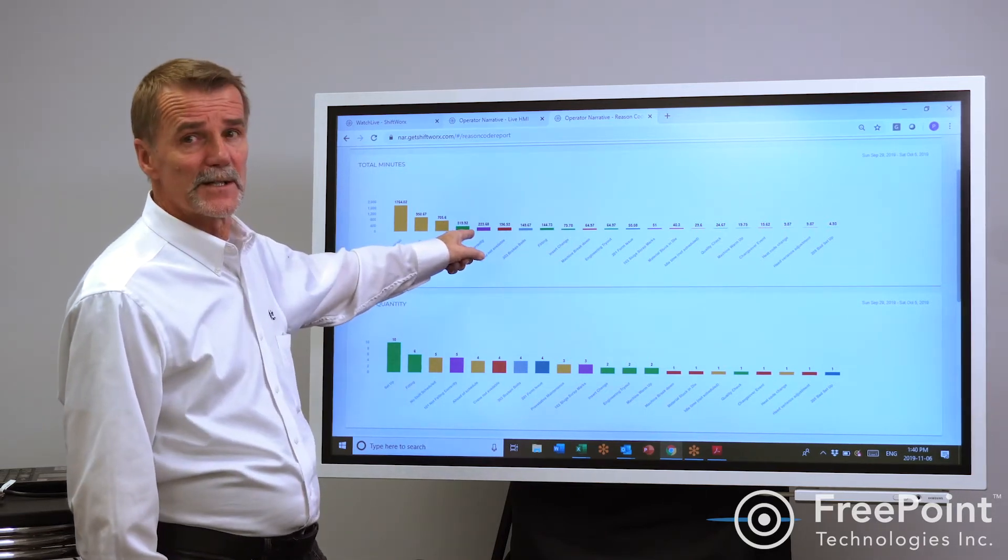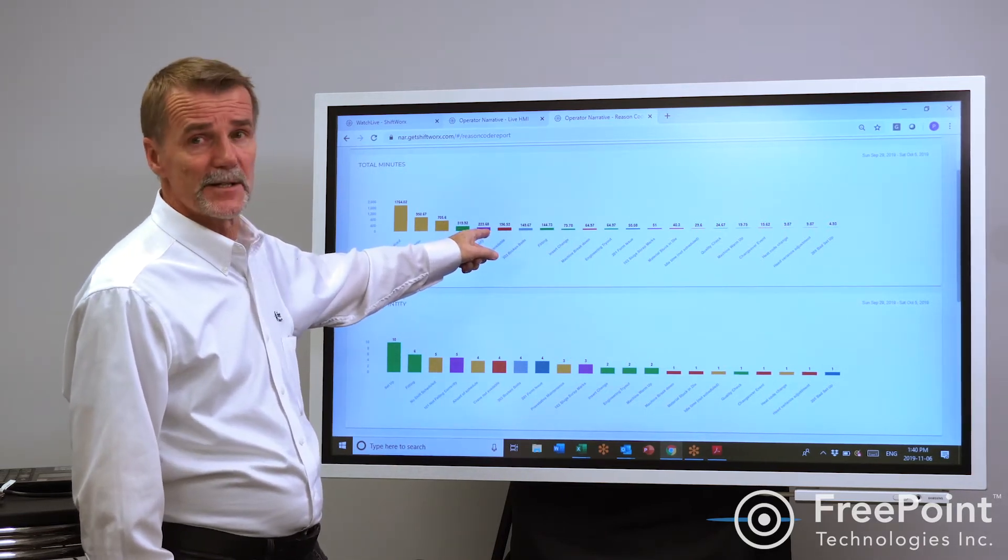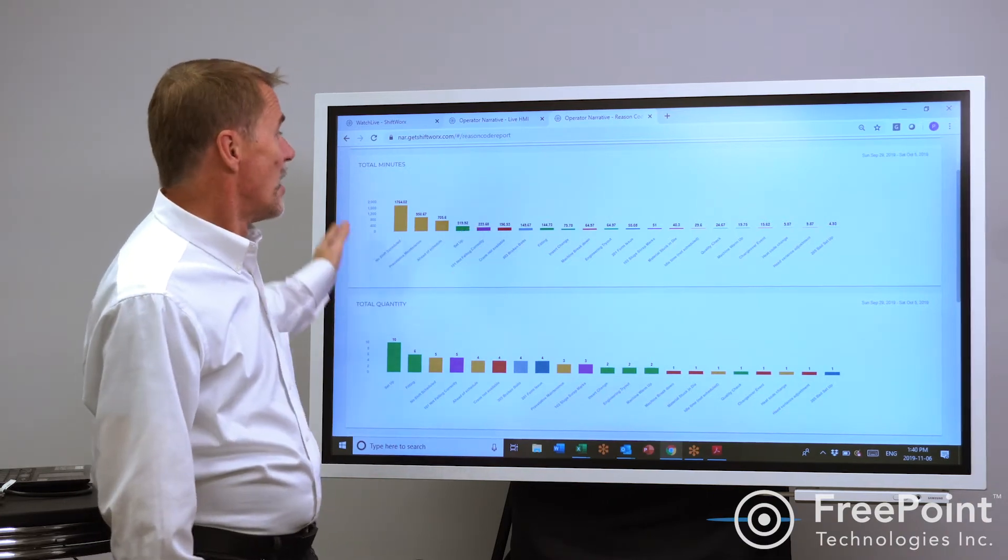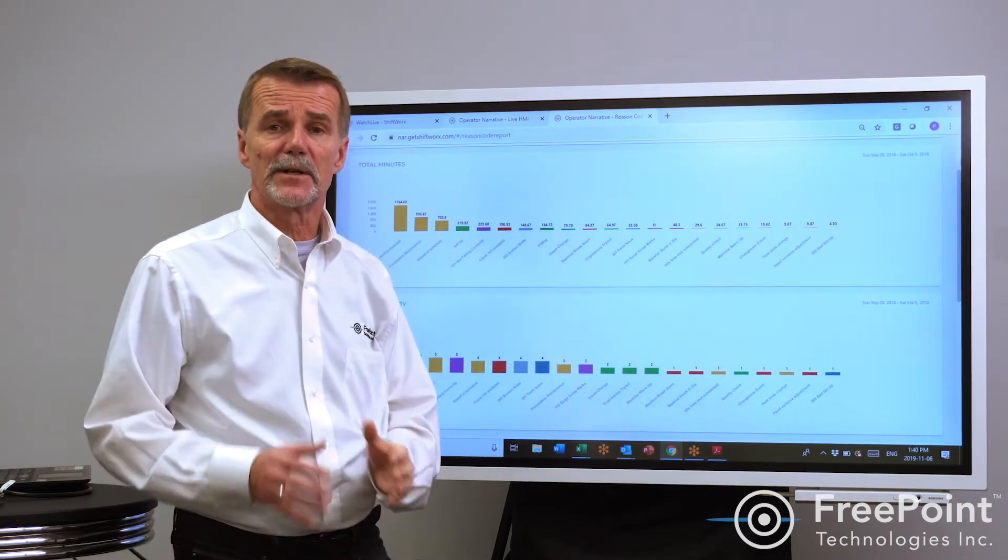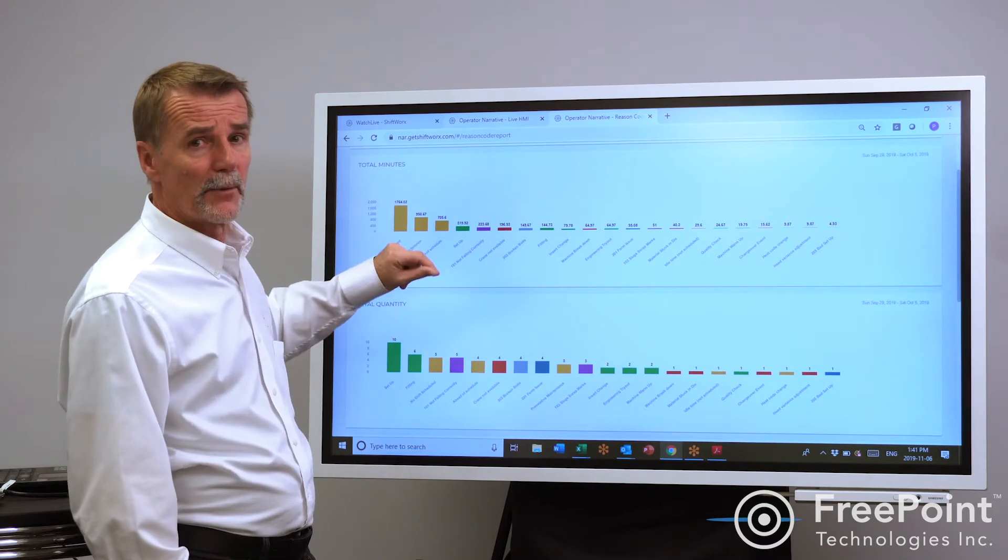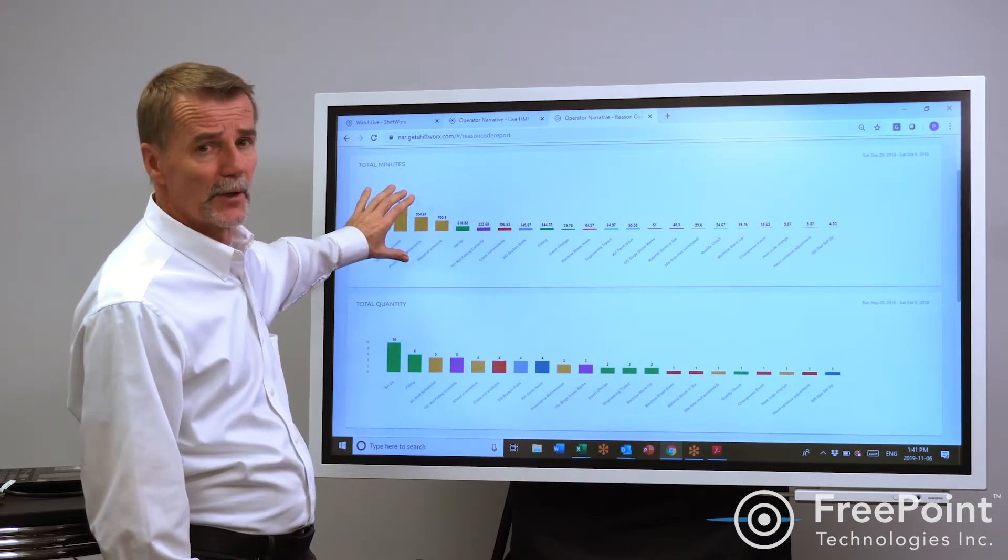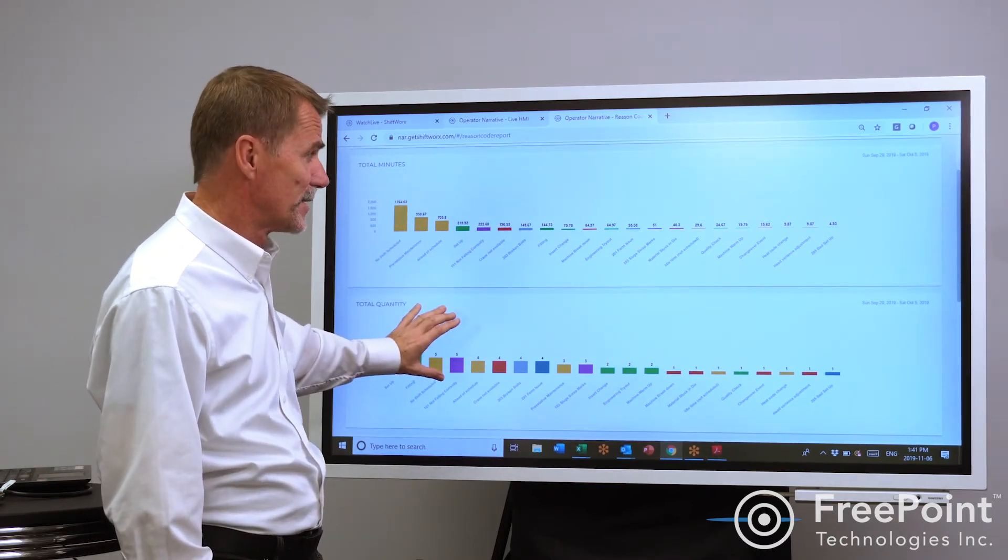Now I see some quality reasons and I see some unexpected reasons. All of these downtime conditions you can establish yourself and then they get reported back to you in the number of total minutes lost and the number of occurrences.